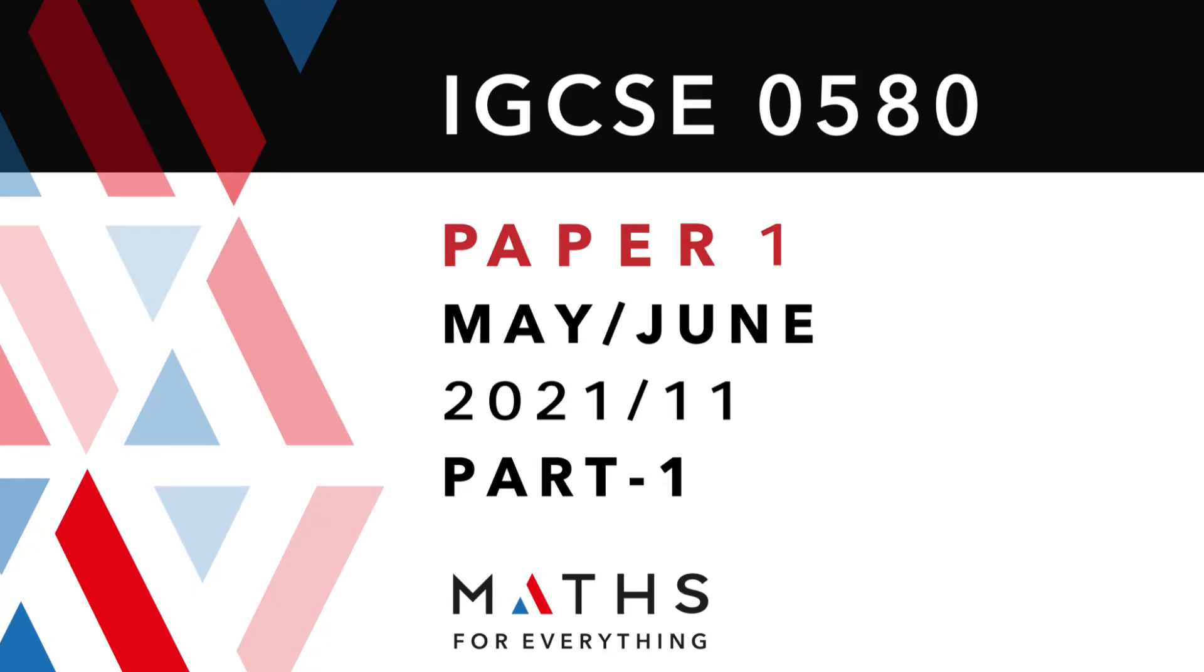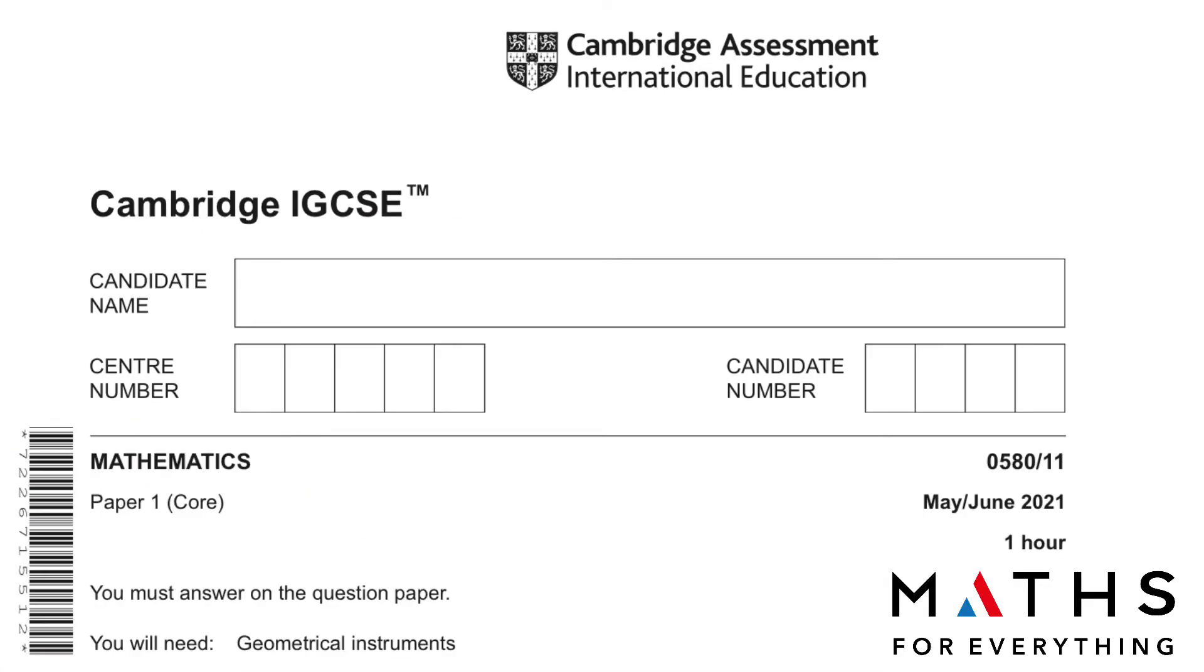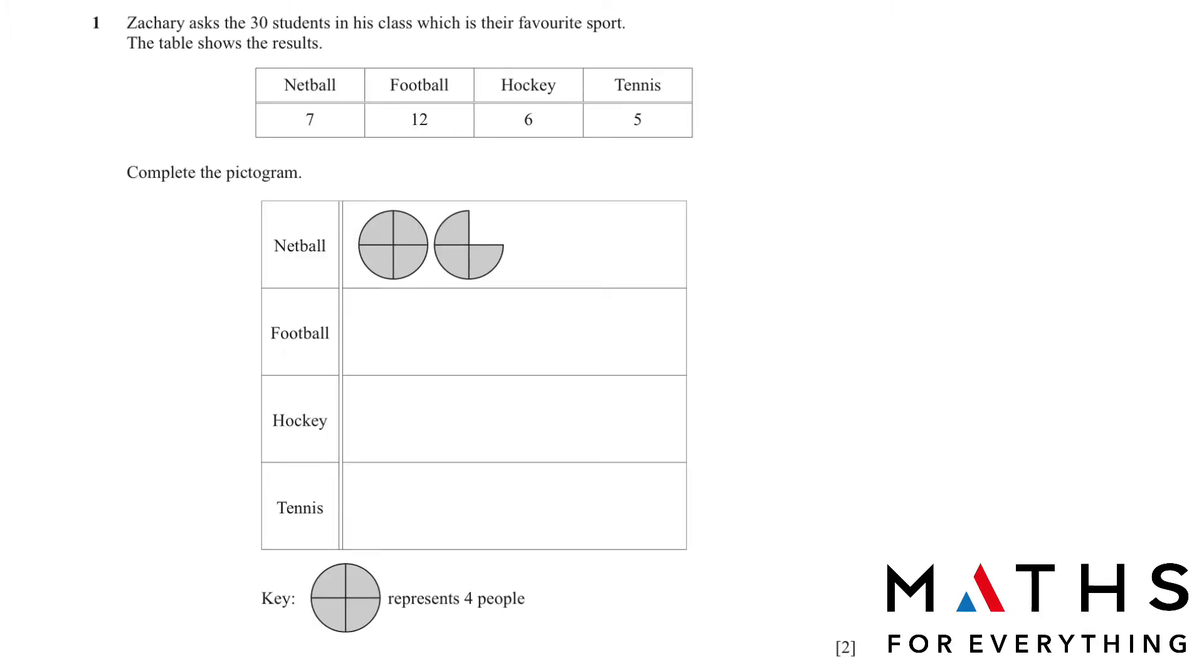Assalamu alaikum. Welcome to my channel. In this video, we are going to solve Cambridge IGCSE Mathematics Paper 1 Core, Variant 1-1, May-June 2021. Please remember to subscribe to my channel, like the video and share it with your friends. And if I have helped you, do write in the comment section.